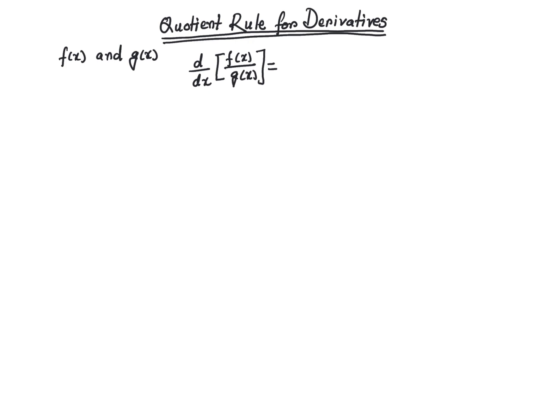When you are doing division, you want to ensure one thing: the denominator does not evaluate to zero. So we need to make sure of that. Now, let me define a function. Let's call it uppercase F of x equal to lowercase f of x divided by g of x, with the assumption that g of x is not equal to zero. We would like to find the derivative of uppercase F.